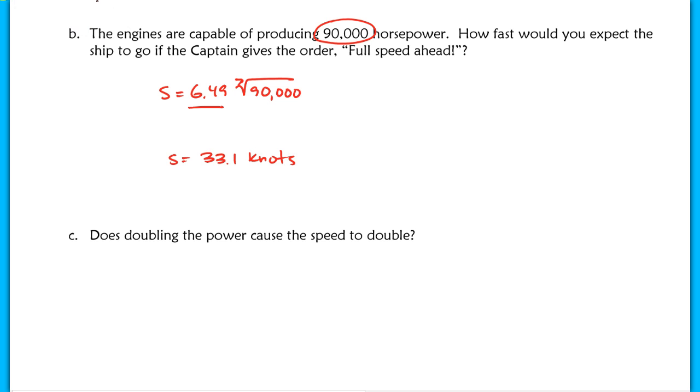In part c, it says, does doubling the power cause the speed to double? I want to look at some actual values that we know in our function. We have the point 45,000 comma 30, which means that at 45,000 horsepower, you're going to get a speed of 30 knots. If we maximize the horsepower engine to 90,000, we end up with only 33.1 knots. So clearly, here, we're doubling our power from 45,000 to 90,000, but it does not double our speed. So the answer to this question is no.